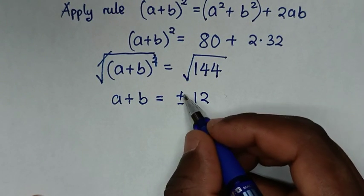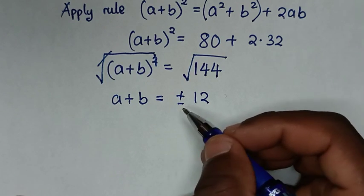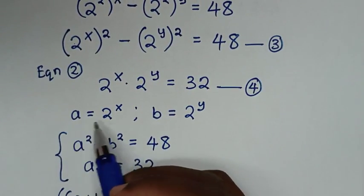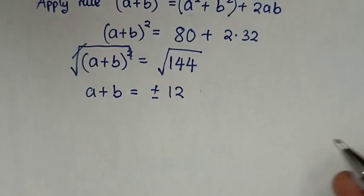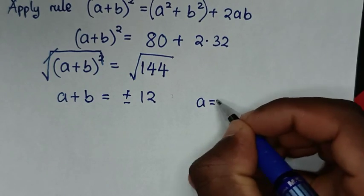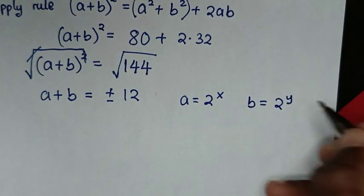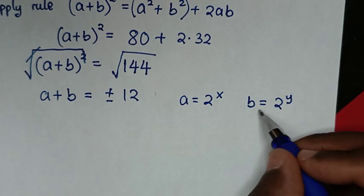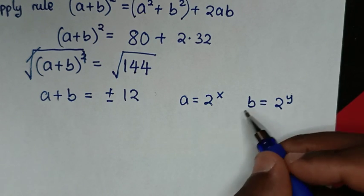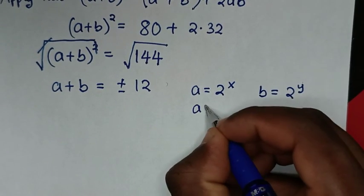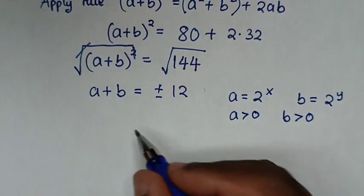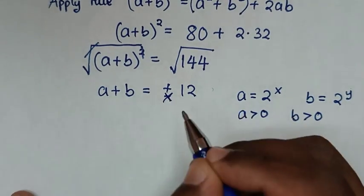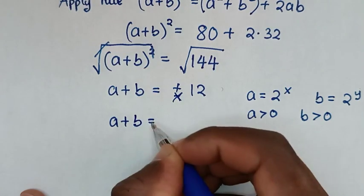From here we have two solutions because of plus or minus. But we recall that a equals 2 power of x and b equals 2 power of y. Since 2 to the power of any number is a positive value, both a and b are greater than zero. Therefore the sum a plus b is positive, so we reject the negative value. Therefore a plus b equals 12.